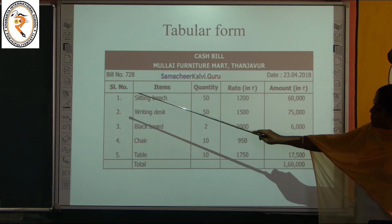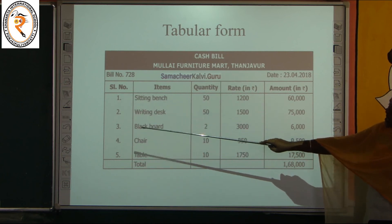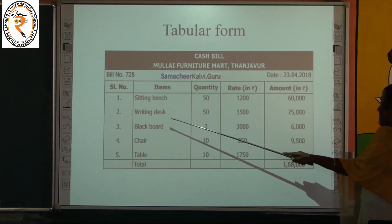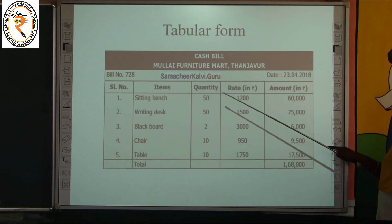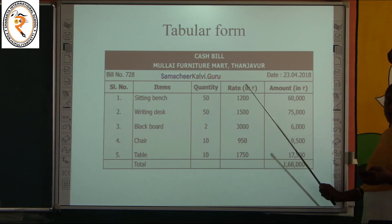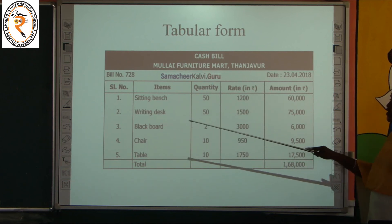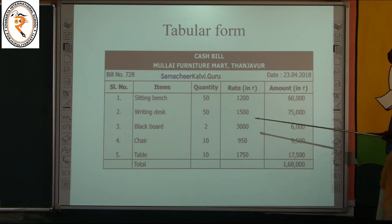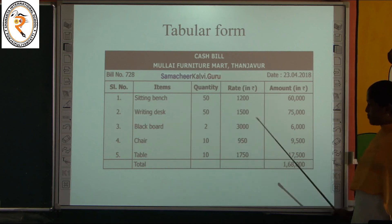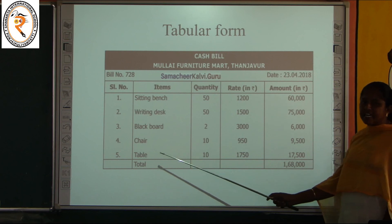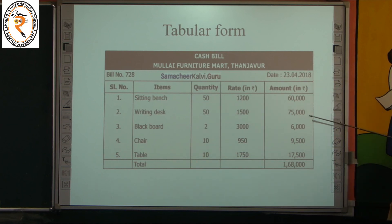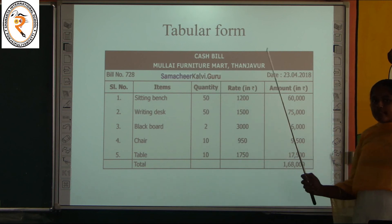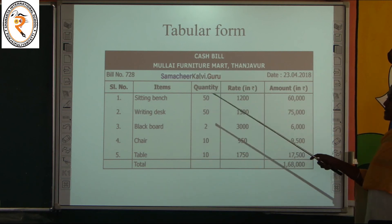Tree diagram — using the tree diagram you can represent the family tree. That will be grandfather, grandmother, then your father, your mother, uncle — these are the family members. From that: you, your brother, your sister, then niece, nephew. This is the family tree — from the oldest person in your home like grandfather and grandmother to the youngest, even a newborn baby. We can represent persons in the form of a tree diagram.